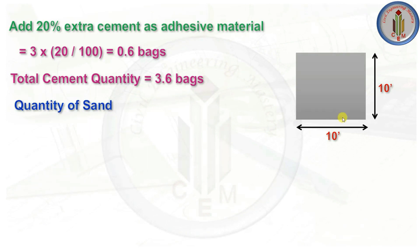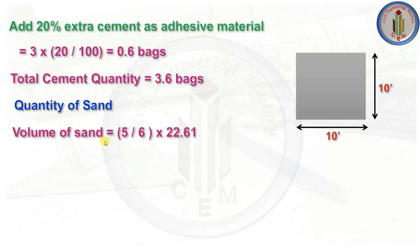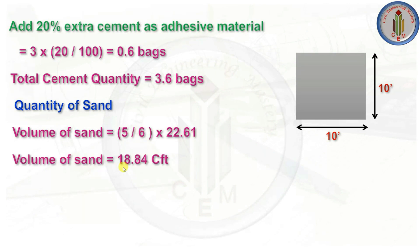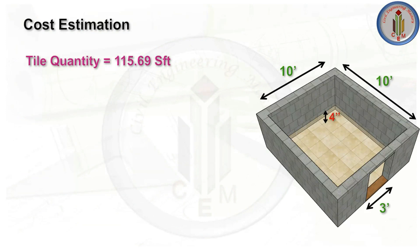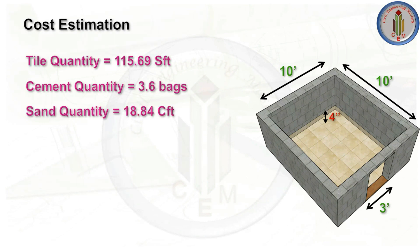Volume of sand = (5/6) × 22.61 = 18.84 cft. So, the overall material quantities are: total tile quantity = 115.69 sq ft, total cement = 3.6 bags, and sand = 18.84 cft.